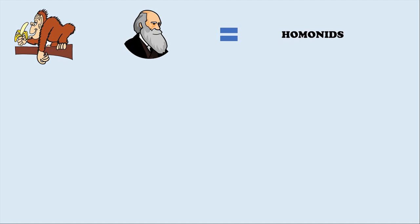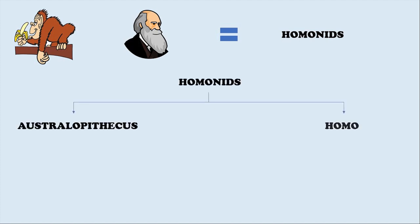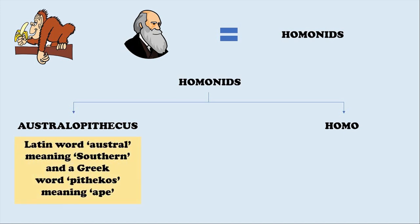Apes and humans belong to the same superfamily called hominids. The hominids are divided into the genus Australopithecus and the genus Homo. Australopithecus comes from the Latin word Austral meaning southern and the Greek word Apithecus meaning ape. The genus Homo is distinguished by its large brain size.